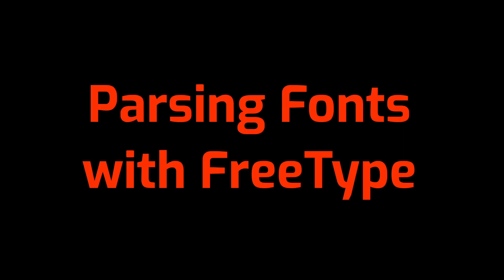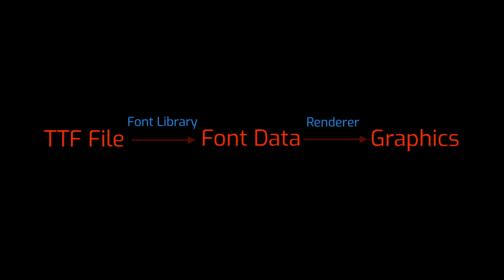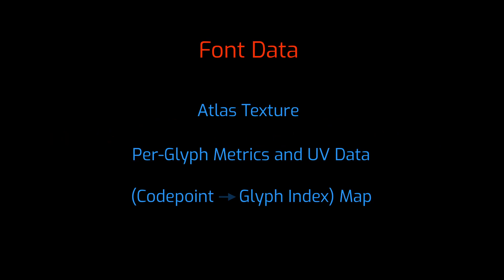Last time I was trying to get font parsing working with stbtruetype, but I hit a hard limit of that library and didn't manage to finish. So this time I'm pulling out the big guns with the FreeType library. The goal is to make a code path that extracts all of the data that I need: a glyph atlas, glyph metrics, and a map that takes code points to glyph indexes.